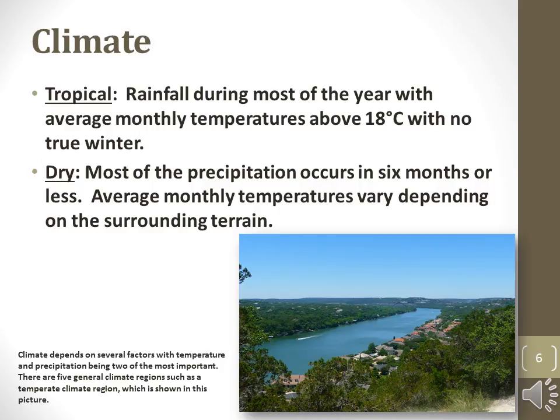Tropical climates are characterized by warm temperatures all year long and heavy rainfall. Dry climates occur in ecosystems that get rain during six or less months of the year, but average temperatures may vary.